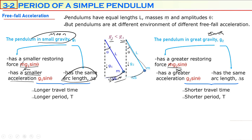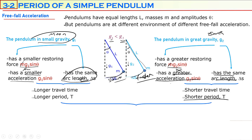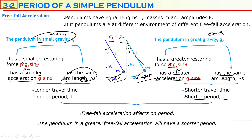On Earth, the pendulum has the same arc length but greater acceleration, so it moves faster. Moving faster means a shorter travel time and therefore a shorter period. So two identical pendulums — one on Earth and one on the moon — the one on Earth will have a greater acceleration and will move in a shorter time, giving a shorter period. We conclude that free-fall acceleration affects the period: greater free-fall acceleration leads to a shorter period.